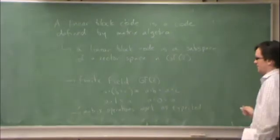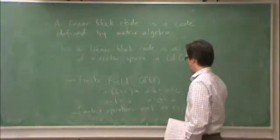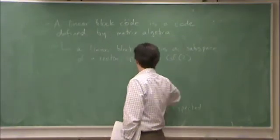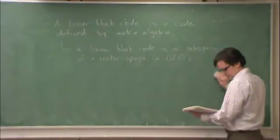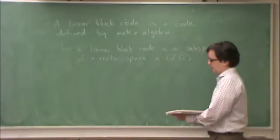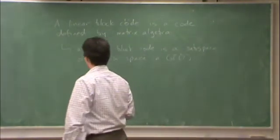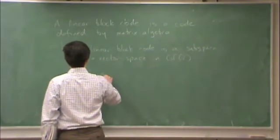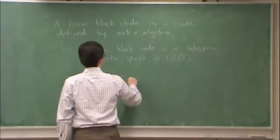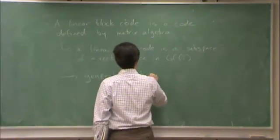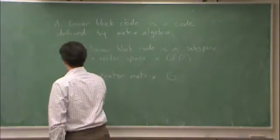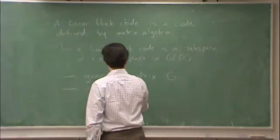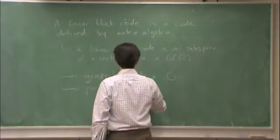This is the idea. In practice, what's going on is not very complicated. In order to define a linear block code, we have a generator matrix, therefore it's G and what's called a parity check matrix, H.